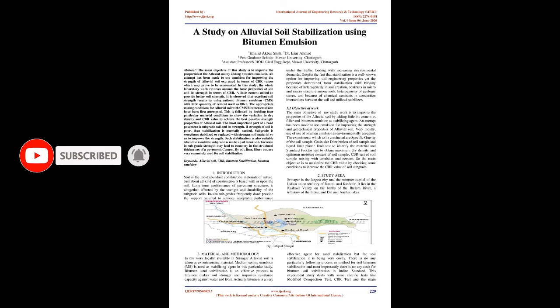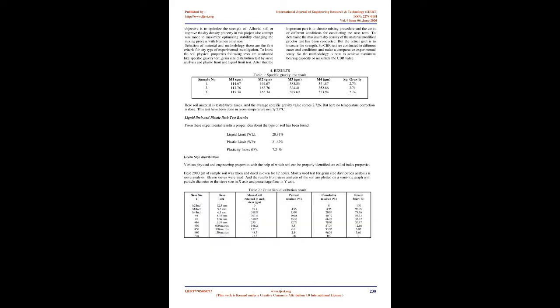The most important part of a road pavement is subgrade soil and its strength. If strength of soil is poor, then stabilization is normally needed. Subgrade is sometimes stabilized or replaced with stronger soil material so as to improve the strength. Such stabilization is also suitable when the available subgrade is made up of weak soil. Increase in subgrade strength may lead to economy in the structural thicknesses of a pavement. Cement, fly ash, lime, fibers, etc. are very commonly used for soil stabilization.